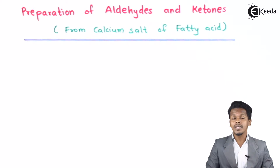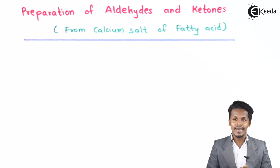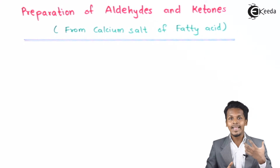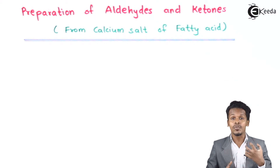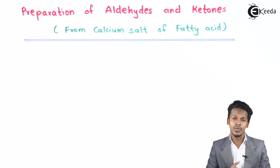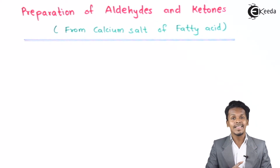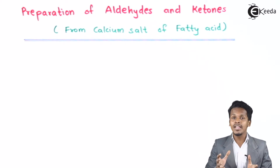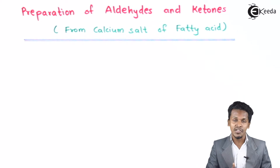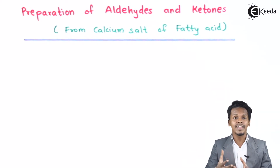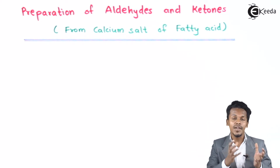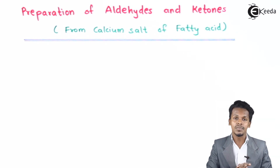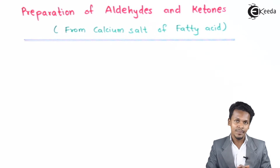Whenever a calcium salt of fatty acid undergoes a dry distillation process or a pyrolysis process, it gives us an aldehyde or a ketone. This kind of reaction is basically known as a decarboxylation reaction. The reason behind that is the carbon dioxide from a particular calcium salt of fatty acid has been removed.